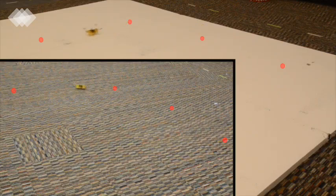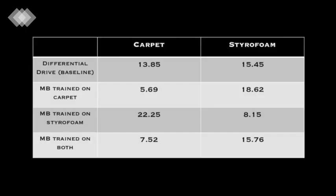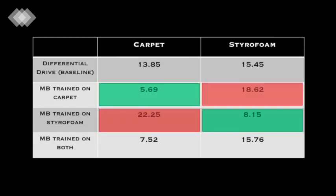Shown here are the executions of the carpet and styrofoam models on their corresponding terrains. As seen from our experiments, the model trained using data from carpet works well on the carpet, and the model trained using data from styrofoam works well on the styrofoam. The poor performance of either model on the other surface indicates that the dynamics are fundamentally different on these different terrains.